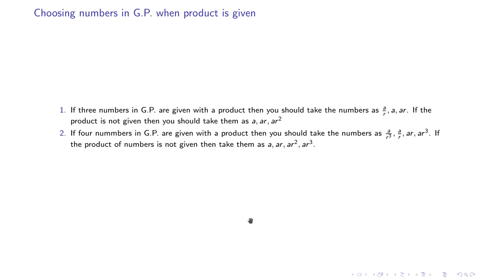Sometimes problems involve the product of numbers in a GP. If the product of three numbers is given, pick them as a/r, a, and ar so that r cancels in the product. If the product is not given, take them as a, ar, and ar². For four numbers in GP, choose a/r³, a/r, ar, and ar³. For five numbers, choose a/r², a/r, a, ar, and ar².